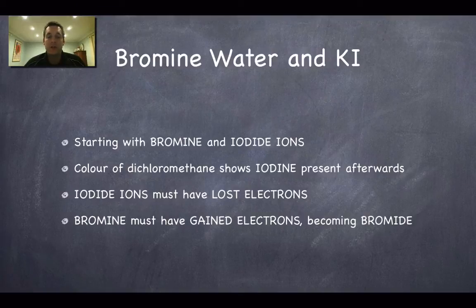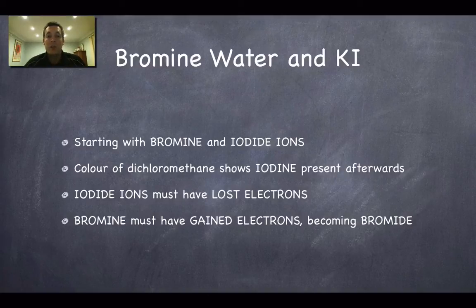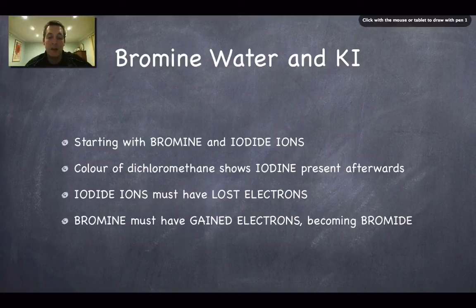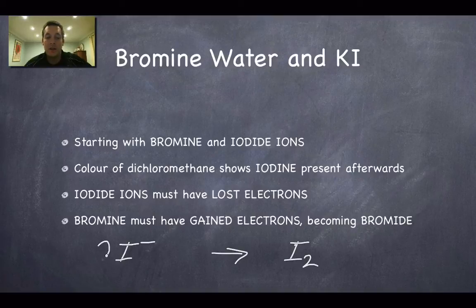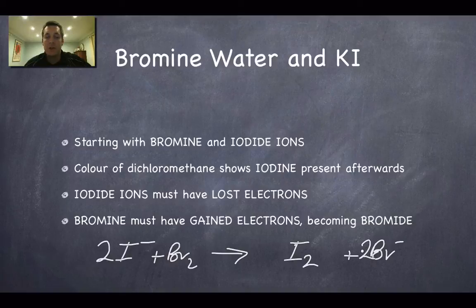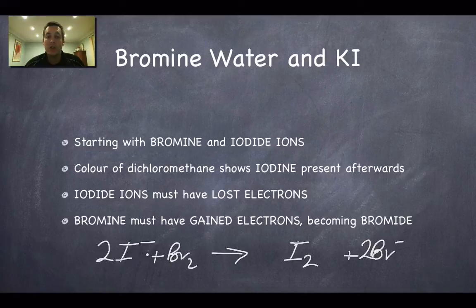Finally, for the reactions, we mixed bromine water with potassium iodide. So we started with bromine as the halogen element and iodide as the halide ion. Once again we can see a pink or purple colour in the dichloromethane, indicating that iodine is present — so there has been a reaction. The iodide ions lost electrons and turned into iodine, while bromine gained those electrons and became bromide ions. So bromine was able to oxidise iodide. Whilst iodine wasn't a good enough oxidising agent to oxidise bromide, bromine is a good enough oxidising agent to oxidise iodide.